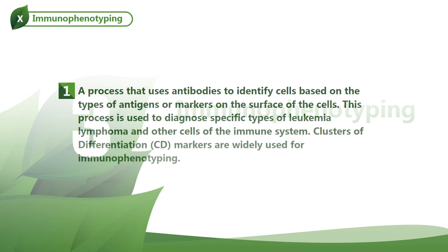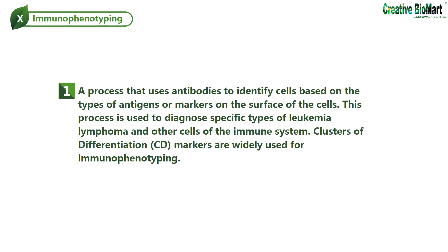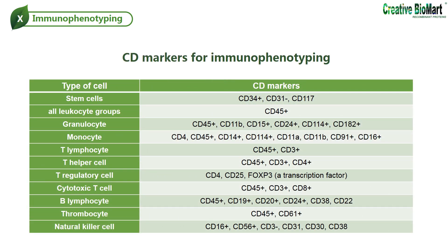Immunophenotyping. CD antigens are mostly detected for the identification of populations and subpopulations of immune system cells — a process that uses antibodies to identify cells based on the types of antigens or markers on the surface of the cells. This process is used to diagnose specific types of leukemia, lymphoma, and other cells of the immune system. Clusters of differentiation markers are widely used for immunophenotyping. In some cases, CD antigens are expressed only at certain stages of development or under certain conditions. Some of the surface antigens are useful for delineating the cell lineage of leukocytes. Unique assignment of a surface antigen to a particular lineage is best when the antigen is related to a unique functional property of a given cell type.